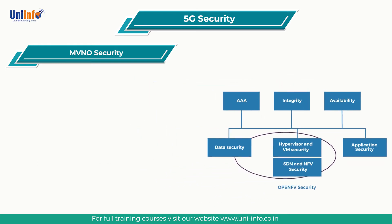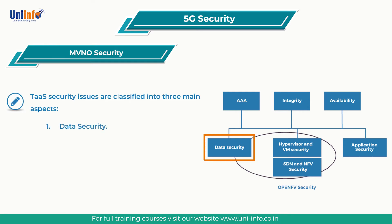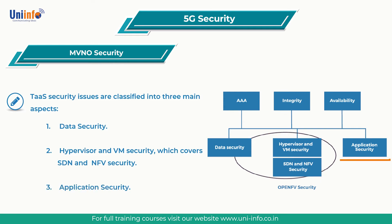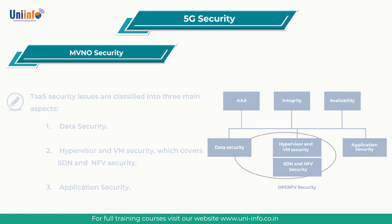In the figure, security issues are classified into three main aspects: first, data security; second, hypervisor and VM security, which covers SDN and NFV security; and third, application security.